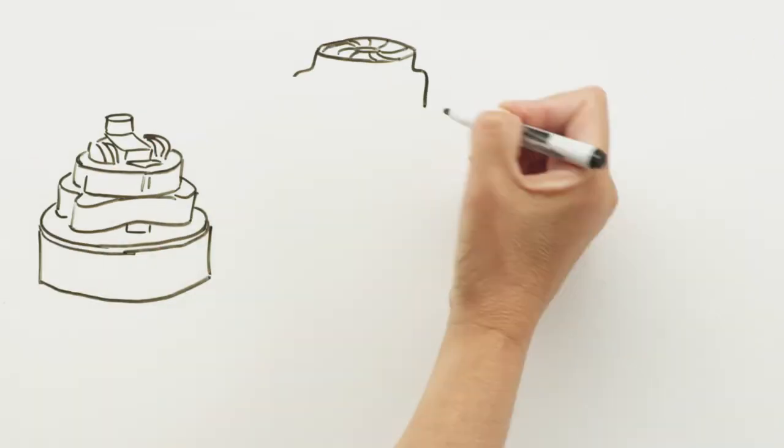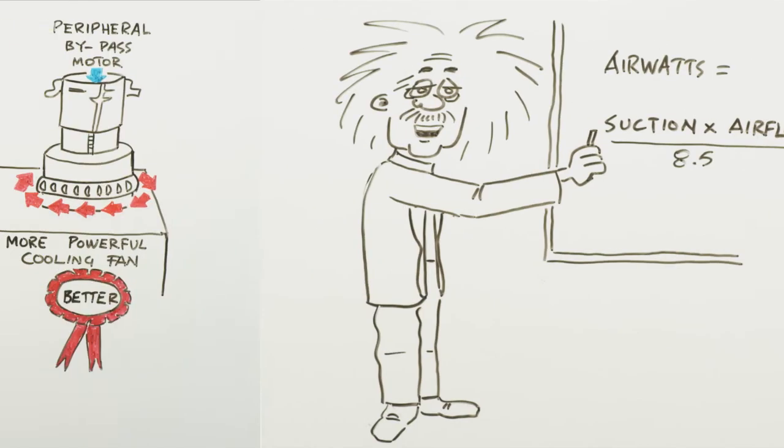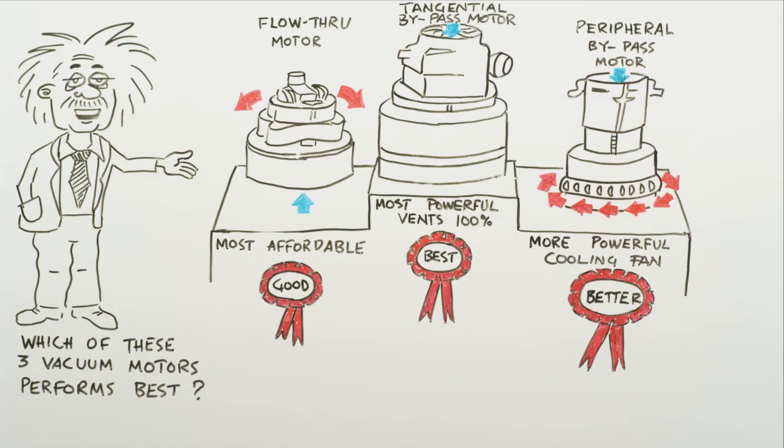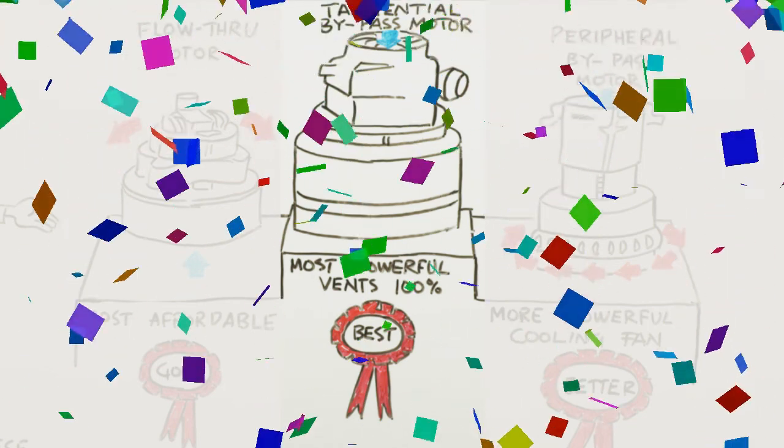So, now that we've told you all about vacuum cleaner performance, how it's measured, and the types of motors, let's go back to our original question. Which of these three vacuum cleaner motors do you think performs best? If you guessed this larger tangential bypass motor, you are correct! Congratulations!